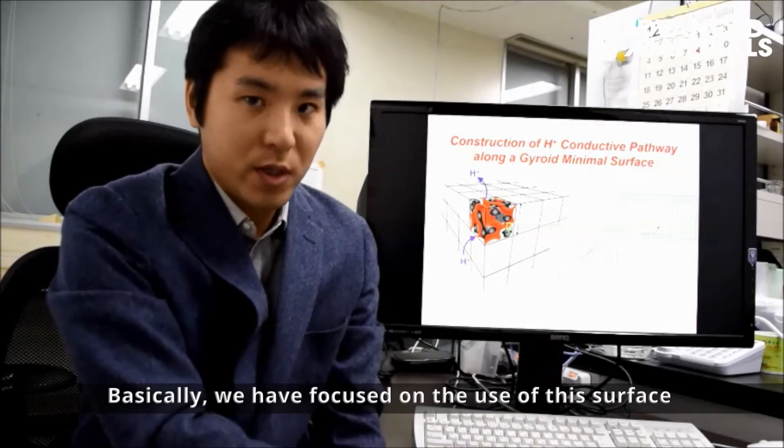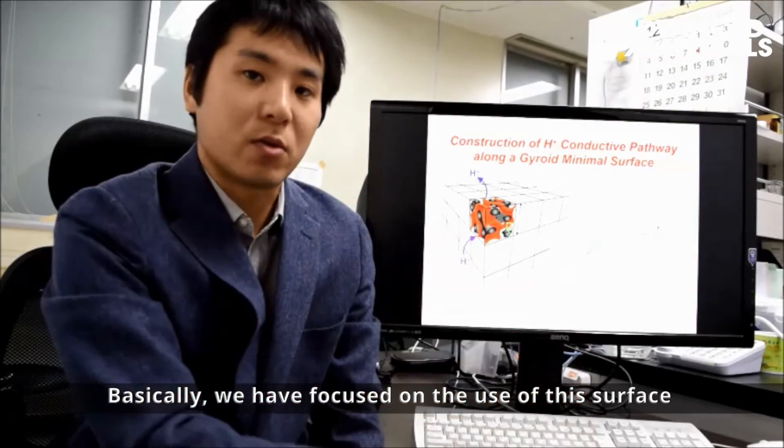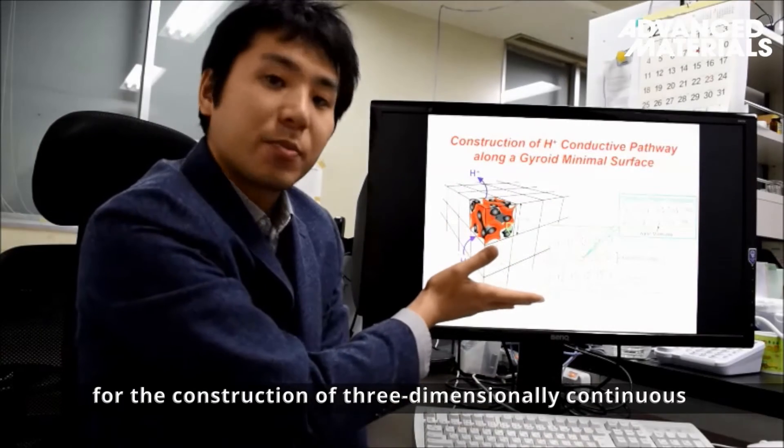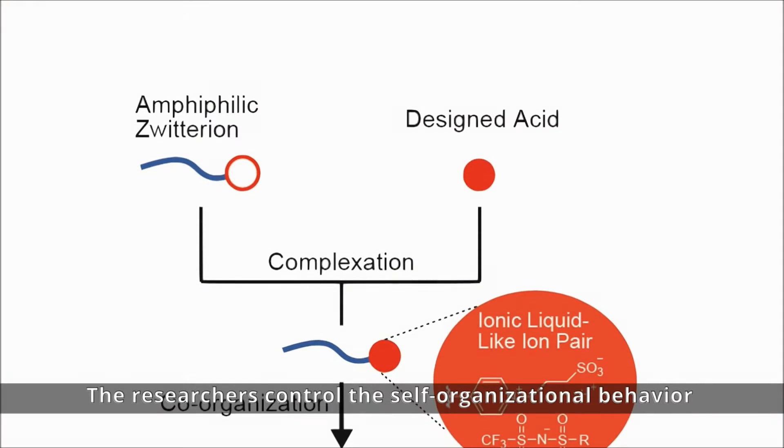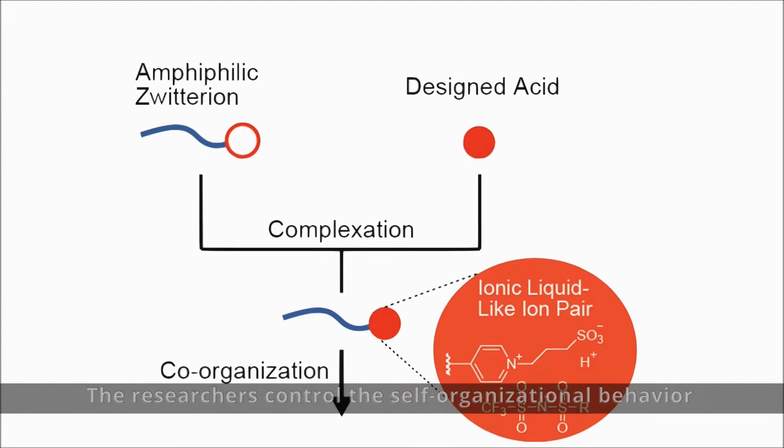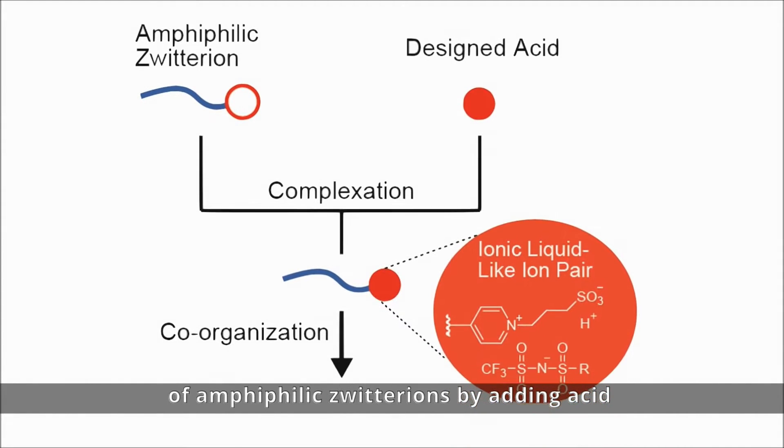Basically, we have focused on the use of this surface for the construction of three-dimensional continuous proton conduction pathways. The researchers control the self-organizational behavior of amphiphilic zwitterions by adding acid.